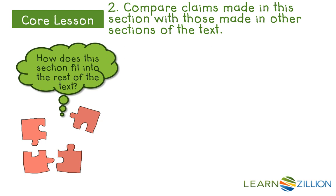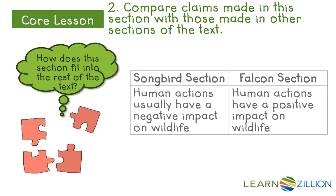I have to think about how this section fits in with the rest of the text. Well, this section is all about the songbird and how human actions, in this case, have hurt the songbird. Maybe the author used this section on songbirds to show us how human actions usually have a negative impact on wildlife. She wanted us to realize that the peregrine falcon's experience was atypical — it wasn't the norm — and that unfortunately human actions have many times hurt wildlife. It seems like Submaranian used this section on songbirds almost as a contrast to the peregrine falcon piece, where humans had a positive impact on a bird species.